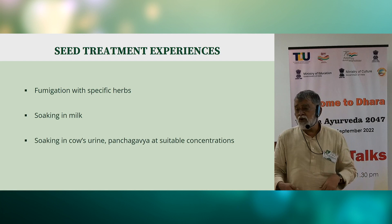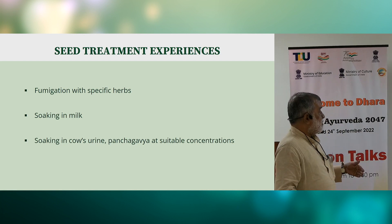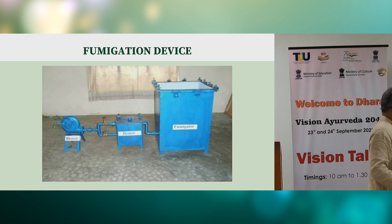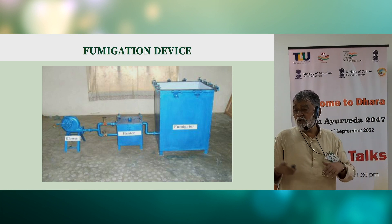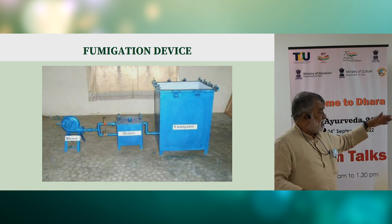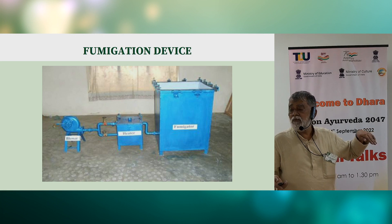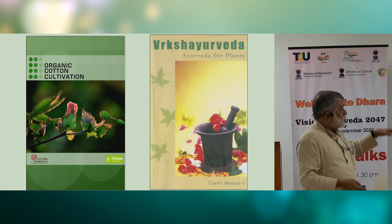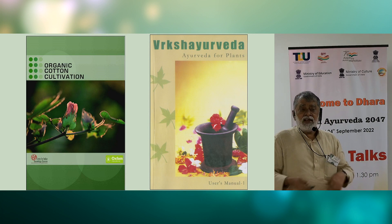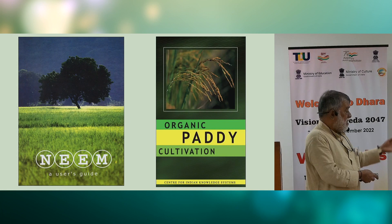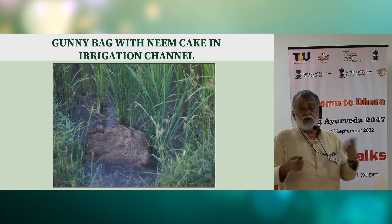In the area of seed treatment, Vrikshayurveda talks about fumigation with specific herbs, soaking in milk, soaking in cow's urine, and panchagavya at various concentrations. At our field location in Sirkazhi, we designed equipment with a blower, heating element and fumigator where seeds can be stored. In collaborative experiments with the agricultural college in Chidambaram, we tested methods to address seed-borne diseases like Fusarium wilt — demonstrating how fumigation with herbs like Vacha and Vai Vidanga can provide protection. We have also published works putting together tested and validated practices from Vrikshayurveda and farmers' wisdom, covering organic cotton cultivation, neem, and organic paddy cultivation.